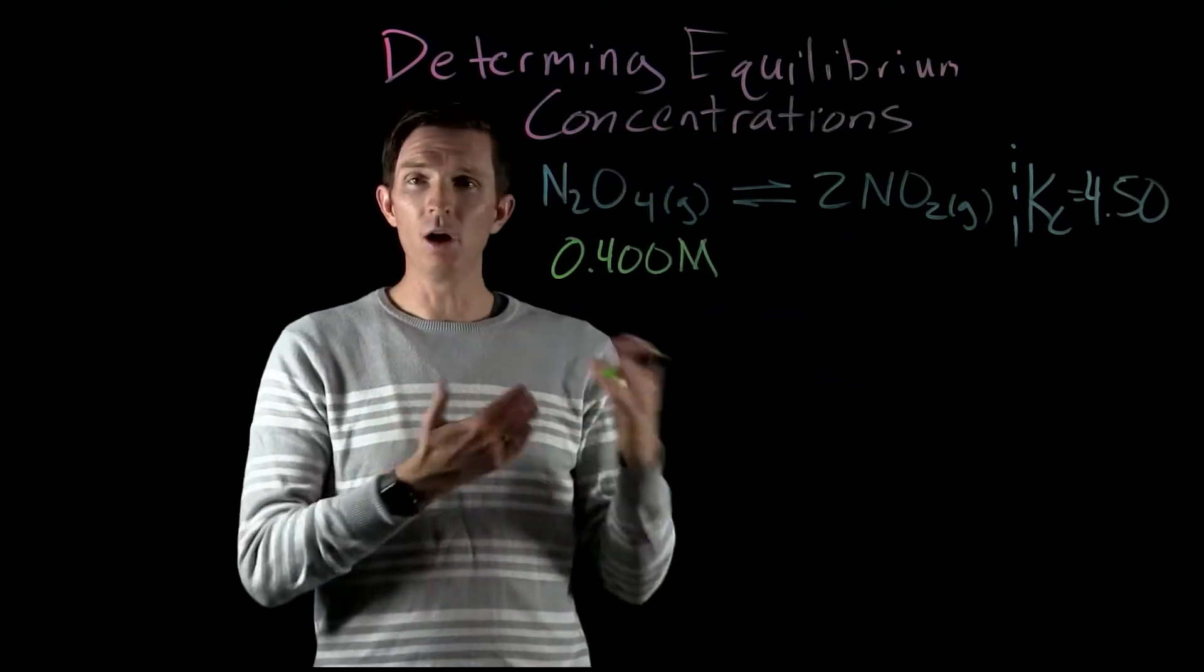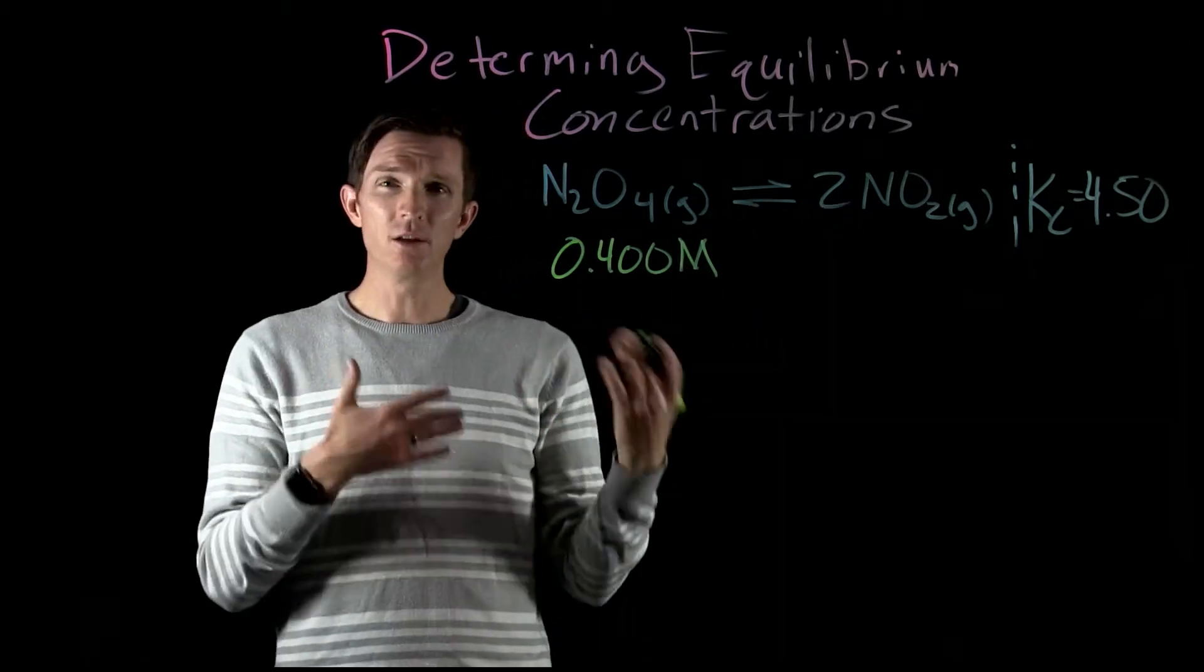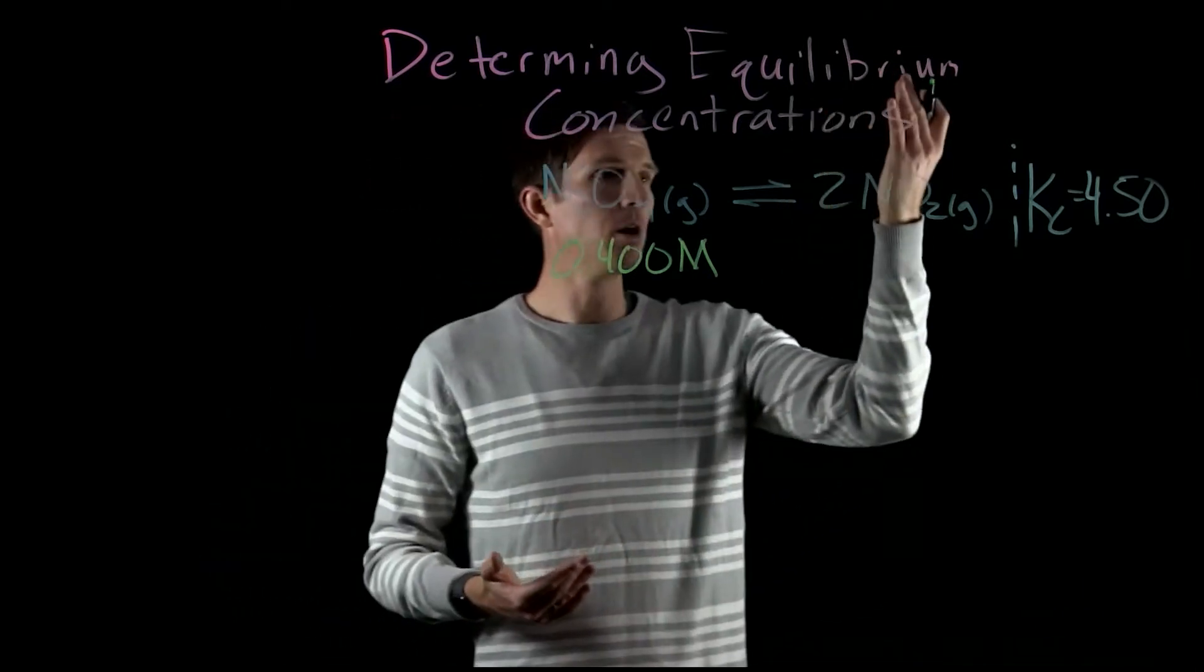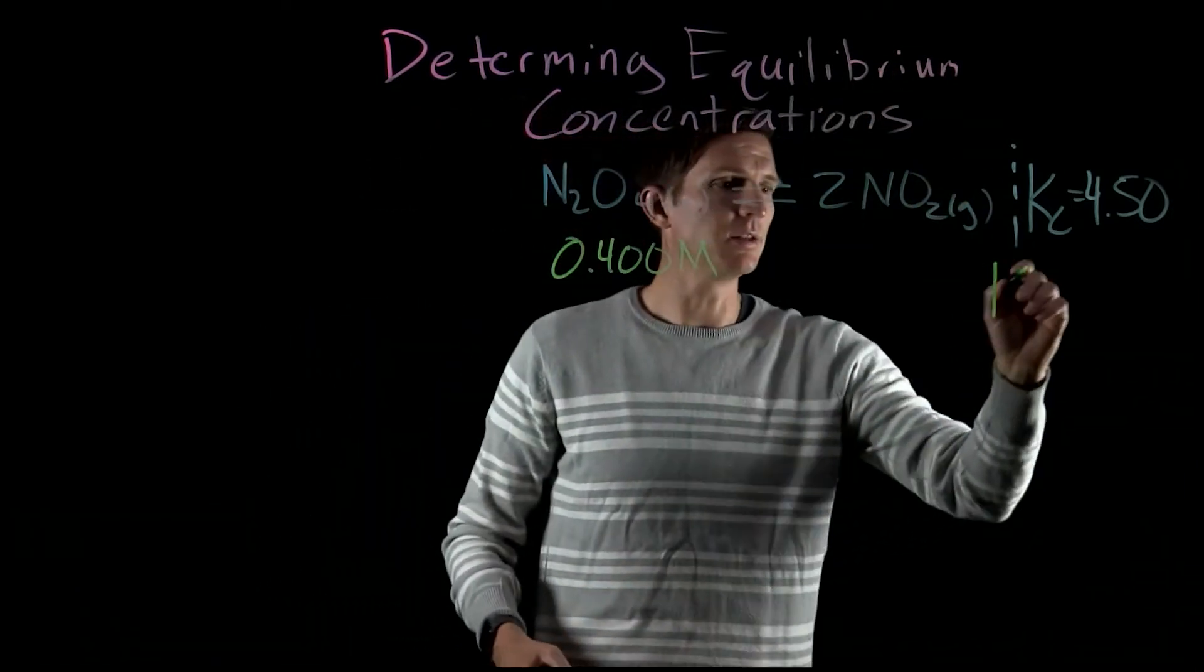Well as we know, we have these equilibrium reactions where it can go forward but it can go reverse, and so then we have a ratio of our products to reactants, our Kc value.